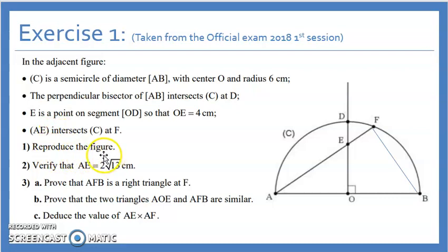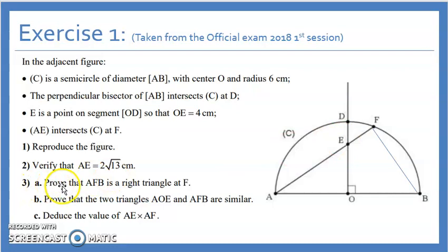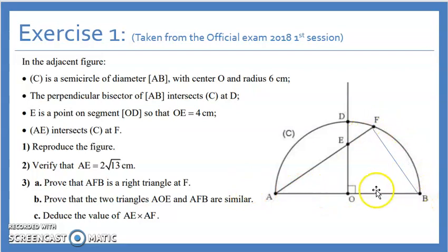I'll reproduce the figure and skip part one. To verify that AE equals 2√13: triangle AOE is a right triangle, OE equals 4 by given and OA equals 6 cm since it's the radius, so you get AE using the Pythagorean theorem. For part 3, prove that AFB is a right triangle at F: angle AFB equals 90° since it is an angle facing the diameter, so it's a right triangle.